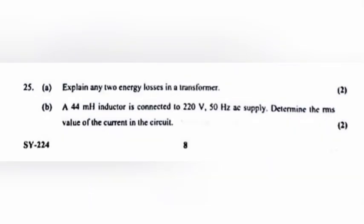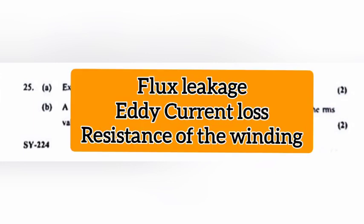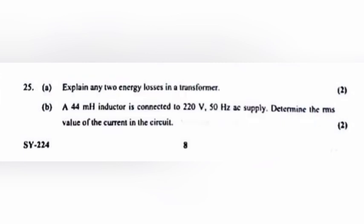Question 25a: Explain any two energy losses in a transformer. Answer: Flux leakage and eddy current loss; resistance of the winding. Explain any two.